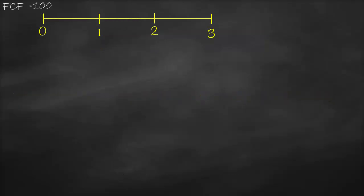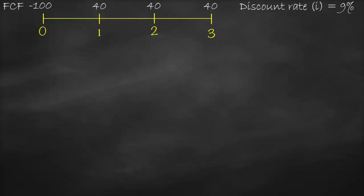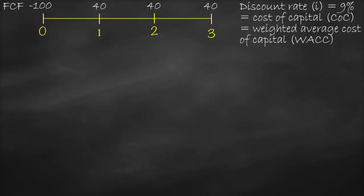Therefore, using the same example again — a three-year project where at year zero we pay 100 million dollars and receive a free cash flow of 40 million at the end of each year — our discount rate for the present value calculation is nine percent. The discount rate is also called cost of capital or weighted average cost of capital, abbreviated as WACC.